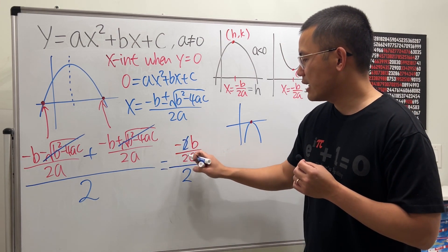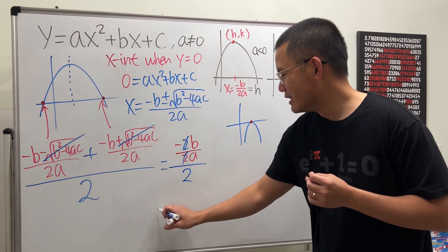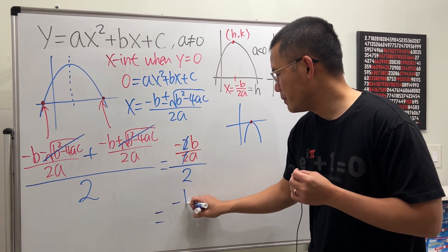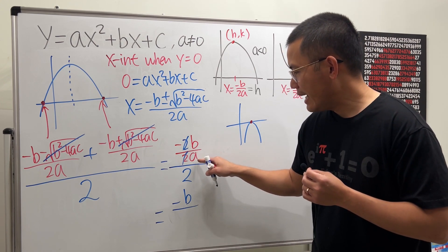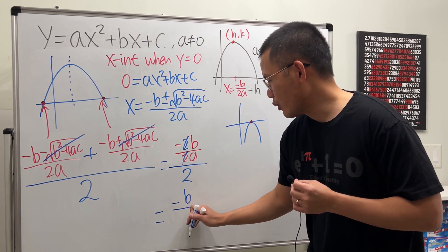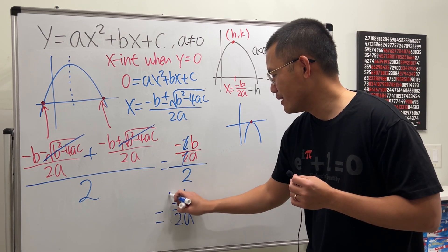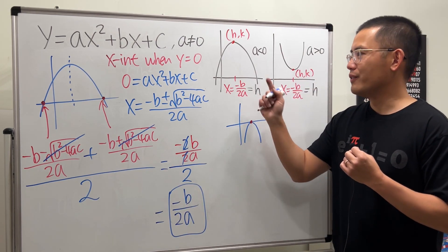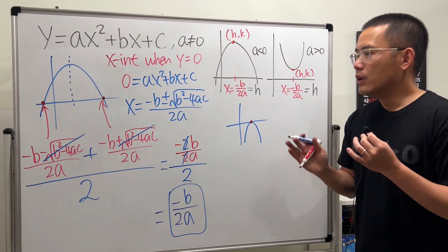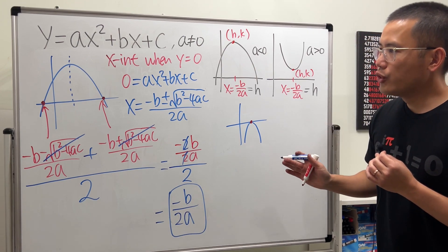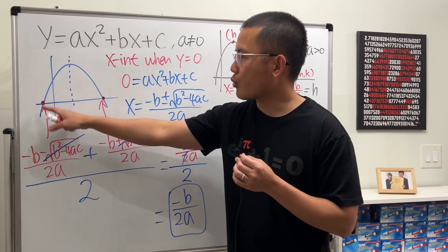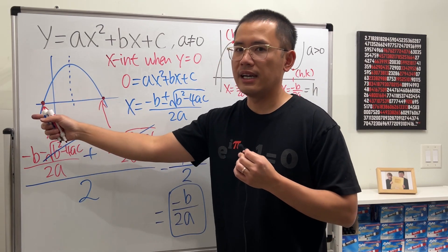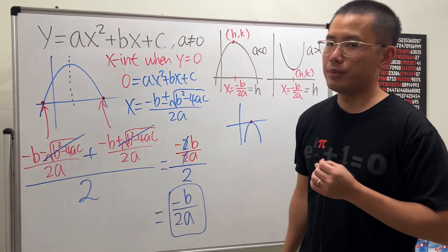This and that will just cancel each other out. And then if you look at the top, we have negative b minus b so that's negative 2b over 2a but then remember to find the average, we still have to divide it by 2. So, this is negative b over 2a. Once again, the vertex formula of a parabola.